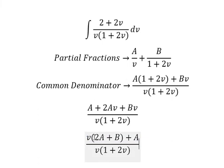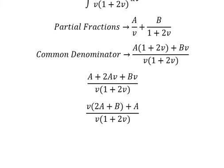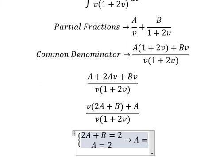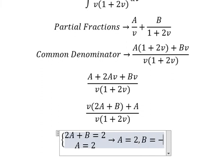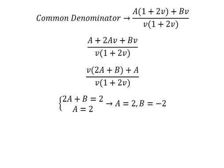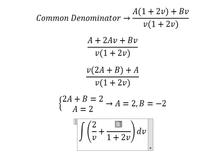Now we compare coefficients. For the constant term: A equals 2. For the v coefficient: 2A plus B equals 2, giving B equals negative 2. We create a system of equations to find A and B. So A equals 2 and B equals negative 2. We substitute A and B back into the partial fractions.